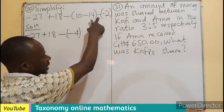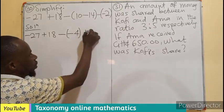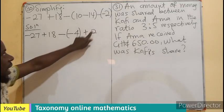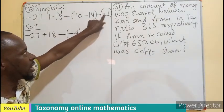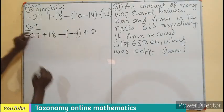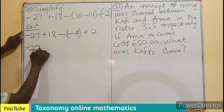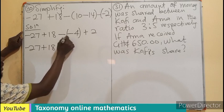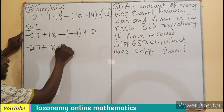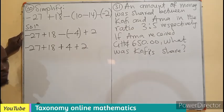Then negative 1 times negative 2 gives you a positive 2. Similarly, as we have done here, negative 1 times this, we also have a negative 1 times this. So negative 27 plus 18, and negative 1 times negative 4 gives you plus 4, plus 2.